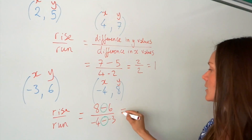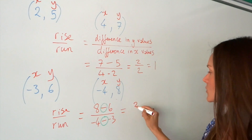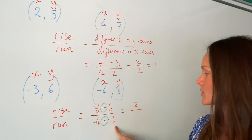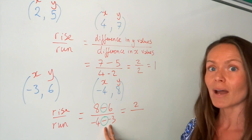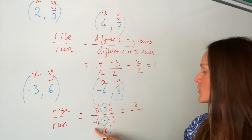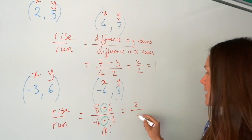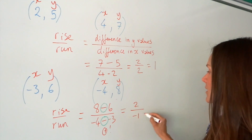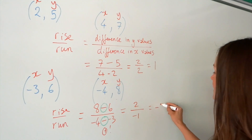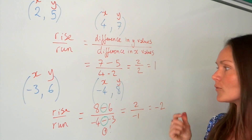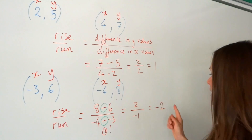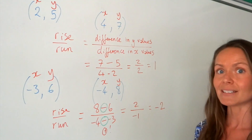Let's work that out. Eight take away six is two. Minus four minus minus three — the double minus turns into a plus, so minus four plus three is minus one. That fraction simplifies to negative two. So the gradient of the straight line that passes through those two points is negative two.